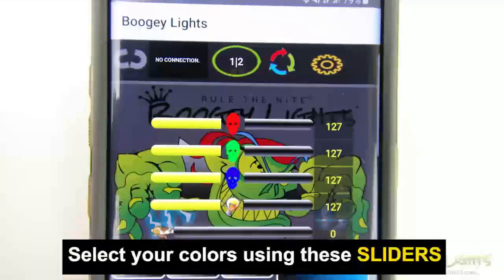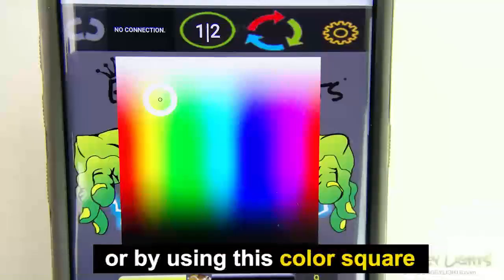In addition, the color selection and lighting effects are controlled by sliders or a color square on your screen, so you can adjust the color, speed, and intensity to get the lighting exactly the way you want it.